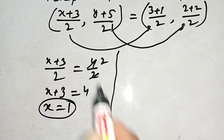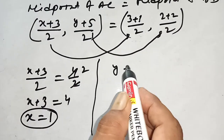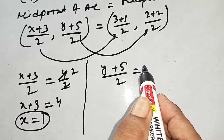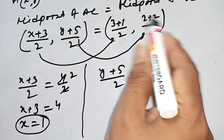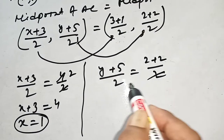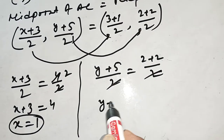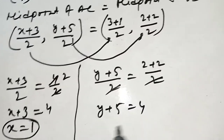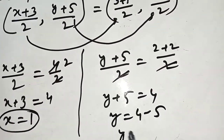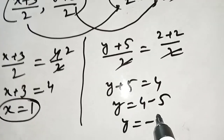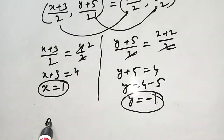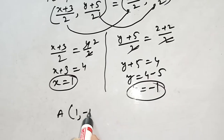Next, y plus 5 by 2 equals 2 plus 2 by 2. So y plus 5 equals 4, y equals 4 minus 5, y equals minus 1. That means the coordinate of A equals (1, minus 1).